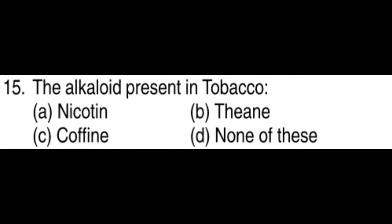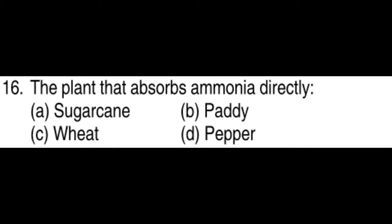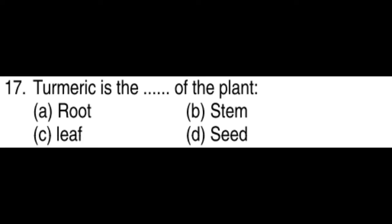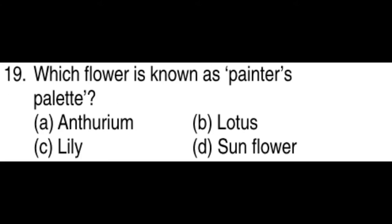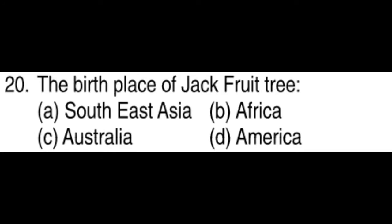The alkaloid present in tobacco is nicotine. The plant that absorbs ammonia directly is paddy. Turmeric is the stem of the plant. The smallest flower is Wolffia. The flower known as the painter's palette is Anthurium. The birthplace of the jackfruit tree is South East Asia.